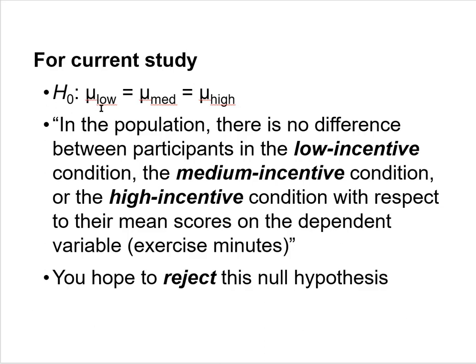For our current investigation with three conditions, the statistical null hypothesis is: μ_low = μ_medium = μ_high. In verbal terms, in the population there is no difference between participants in the low, medium, or high incentive conditions with respect to their mean scores on the dependent variable — exercise minutes. That is the omnibus statistical null hypothesis we are going to test.